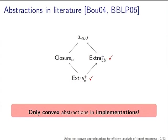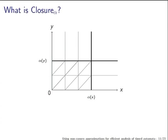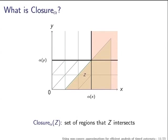So far I have been talking about history. In this talk we will see how to use the non-convex closure abstraction — this is the first non-convex abstraction to be efficiently used. What is closure? This diagram shows the division of the xy plane into regions as defined by the very first paper of Alur and Dill. Given a zone, the closure is just the union of all the regions that intersect the zone. You can clearly see that this is non-convex.